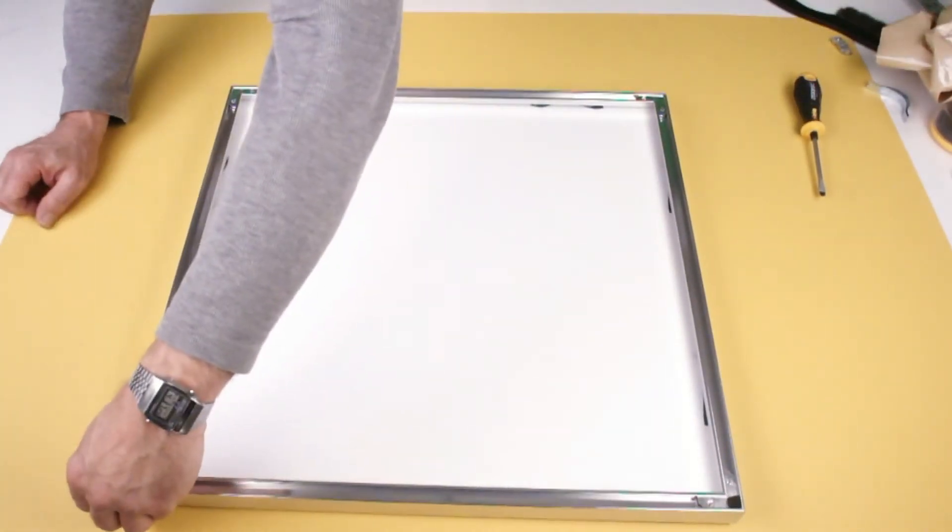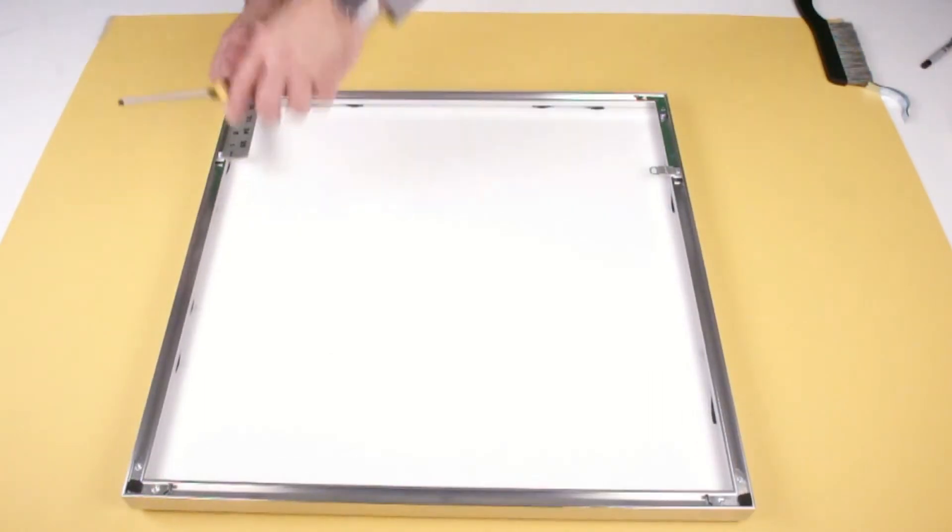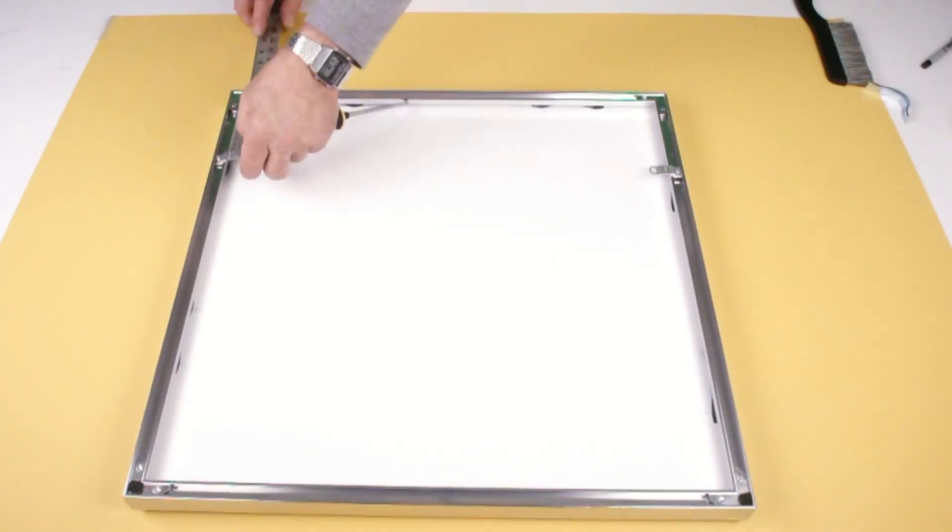Now attach your wire by measuring one quarter of the frame's vertical length from the top.